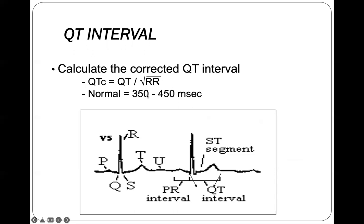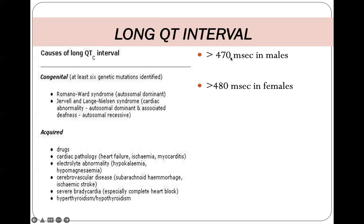QT interval prolongation is above 450 milliseconds, and short QT interval is below 350 milliseconds. You should also know that QT interval differs slightly between males and females, with females having a slightly prolonged QT interval. The diagnostic criteria for long QT is above 470 milliseconds in males and 480 milliseconds in females. There is a wide variety of causes for long QT interval.